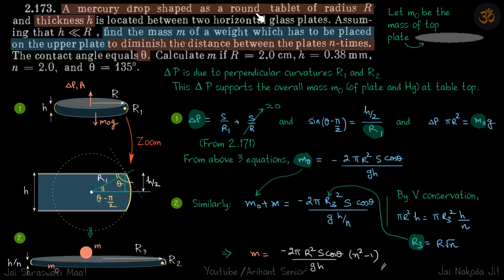A mercury drop shaped as a round tablet of radius r and thickness h is located between two horizontal glass plates. Assuming that h is much less than r, find the mass m of the weight which has to be placed on the upper plate to diminish the distance between the plates n times. If we put some mass m on top, the height reduces n times.